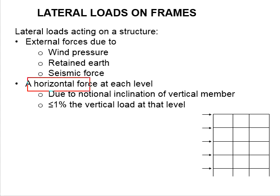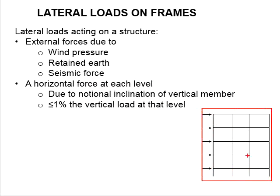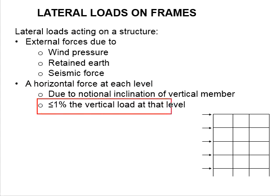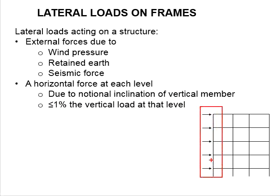On top of that, a horizontal force may need to be applied on the building to cater for the notional inclinations of vertical members. In reality, a building is constructed floor by floor, and it is almost impossible to have columns perfectly in vertical positions. There could be slight misalignment of the columns. For the eccentricity of load transferring from the top level to the foundations, a minimum rotational moment may act on the columns. This is accounted for by assuming a horizontal force at each level of about 1% of the total vertical load of that level.